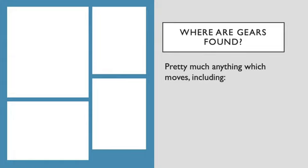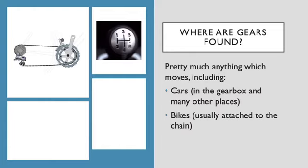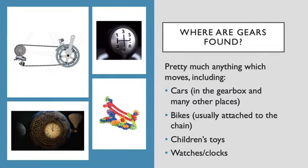Where might you find gears? Pretty much anything that moves—in cars in the gearbox and in other places, bikes usually attached to the chain, in children's toys perhaps, and in watches and clocks and things like that.